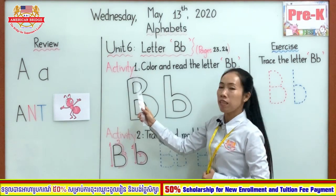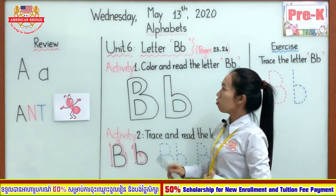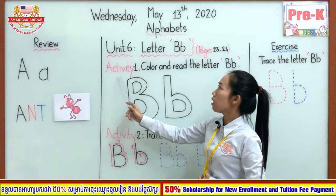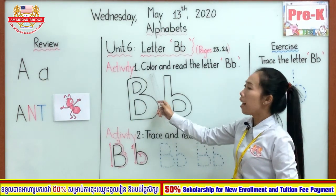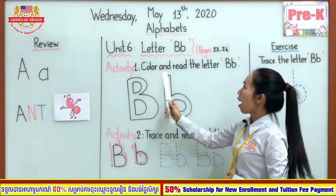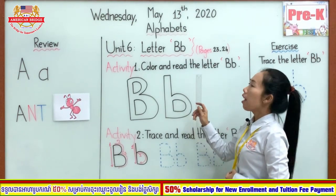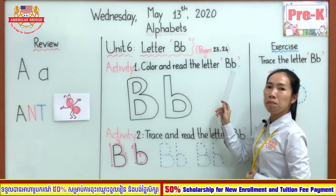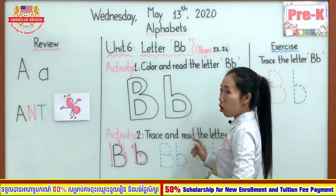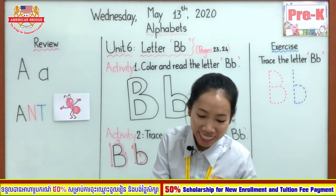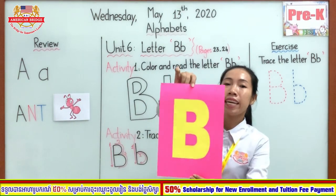You look at here. The activity one: color and read the letter B. So please repeat after teacher. Activity one. Color and read the letter B. Okay. Now you see capital B and small B. So please look at teacher together. Letter B — I want all of your students to know me.